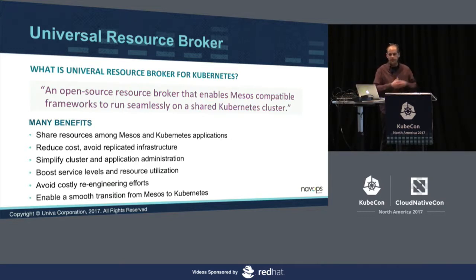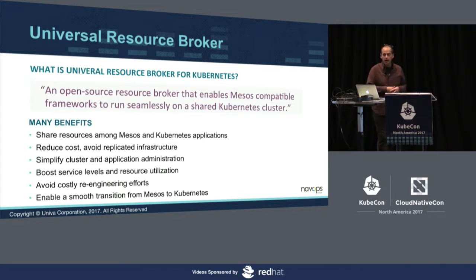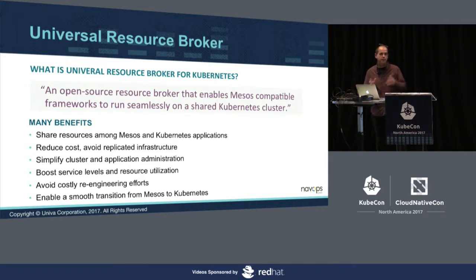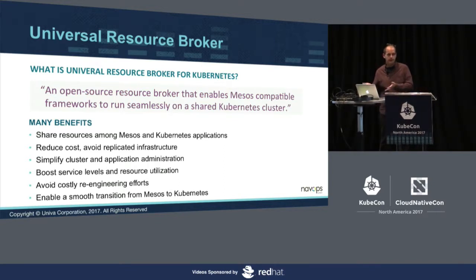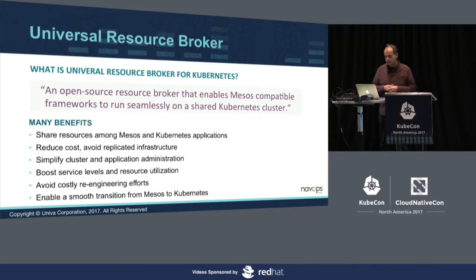URB also simplifies cluster administration and management. If you had two types of environments, you would need two types of knowledge, two types of monitoring, and so on. If you used, for instance, the Mesosphere Kubernetes implementation where you run Mesos as your basic infrastructure and then Kubernetes as a framework inside, you still need to know how to manage both Kubernetes and Mesos — that's not necessary here. Your single pane of glass is Kubernetes. It also helps if you want to transition from Mesos to Kubernetes.